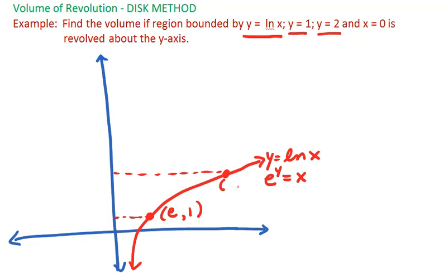And here, when our y coordinate is 2, this would be e squared. That might help us later in our analysis.